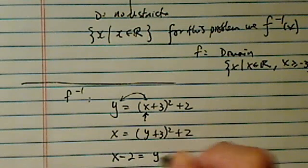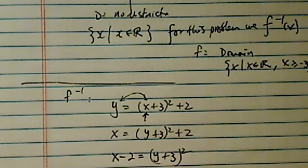I have x minus two equal to (y+3)². I'm going to take a radical root on this, and then minus three. This becomes my y.